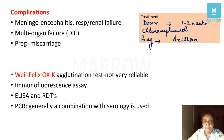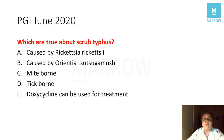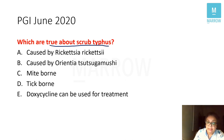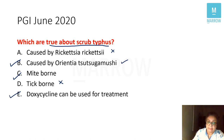A PGI June 2020 question: which statements are true about scrub typhus? It is caused by Rickettsia rickettsii — wrong, it is caused by Orientia. It is mite-borne, not tick-borne — true. Doxycycline can be used for treatment — true. So correct statements are that it is caused by Orientia, it is mite-borne, and doxycycline is used.